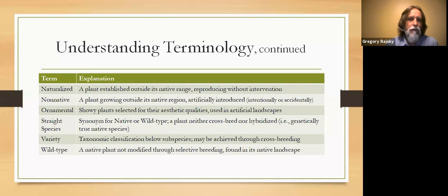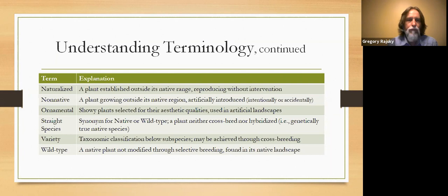A variety is one step below a subspecies, though we won't go into a lot of taxonomic detail since this is more about gardening than plant classification. And again, 'wild type' is simply a synonym for native.